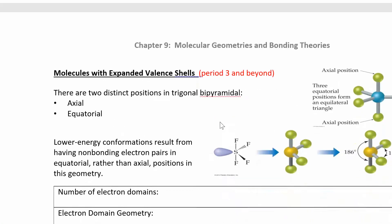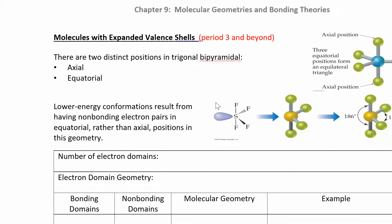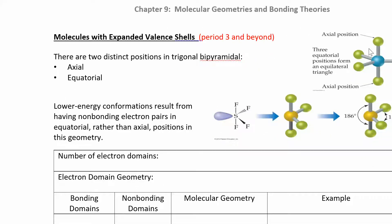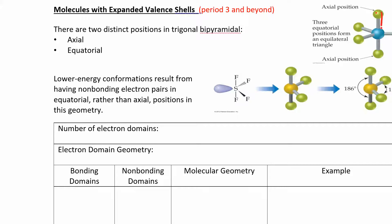The next electron domain geometry is trigonal bipyramidal. With five electron domains, you have one on top, one on the bottom, and three in the middle — those middle positions are called equatorial, and the top and bottom are axial. The bond angles along the equator are 120, but from the top to the middle to one of the sides, the bond angle is 90. So you have two different bond angles: 90 and 120.